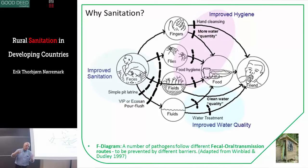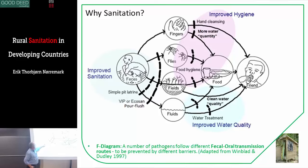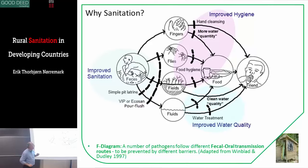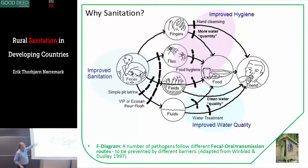This is my version of compiling from the different F-diagrams all the benefits. You can find something very similar on the internet, but I've put in an extra line here to show that VIP, Ecosand, and PoorFlush are limiting these pathways, and simple pit latrines are limiting these too. Talking about improved water quality — that's where you make barriers for the fecal-oral transmission routes. Up at the top you have improved hygiene going down to food hygiene, and with these barriers you have improved sanitation creating barriers from the fecal-oral transmission routes.